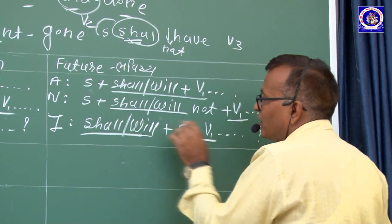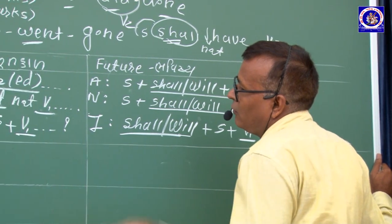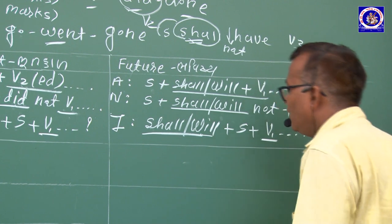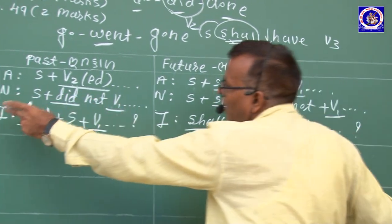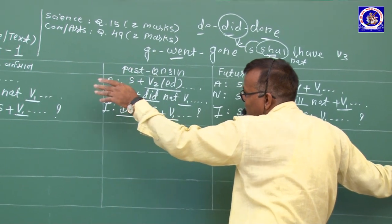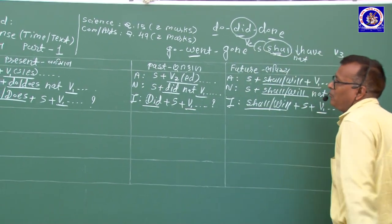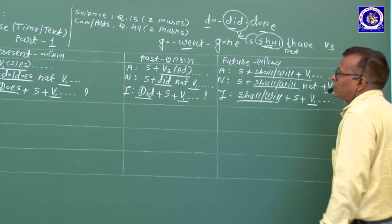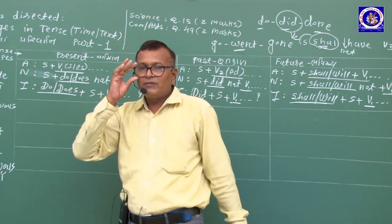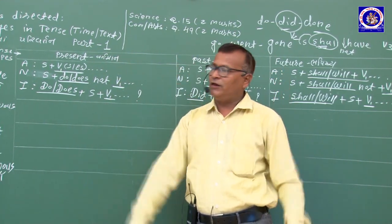Future Tense — Interrogative: Shall/Will + Subject + Verb + ? ત્યાં Verb plain form. Do/Does/Did વાળા ફક્ત Simple Present અને Simple Past Tense — 'Two tenses are hit with English language' — ઘણું મહત્ત્વ. Continuous Tense (ચાલુ કાળ) — Continuous Tense = Verb + -ing.